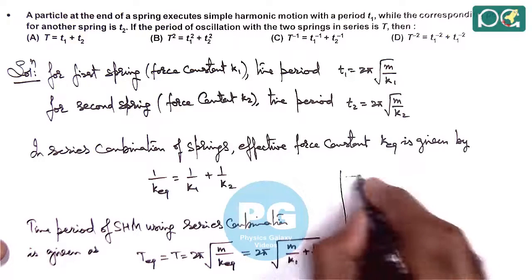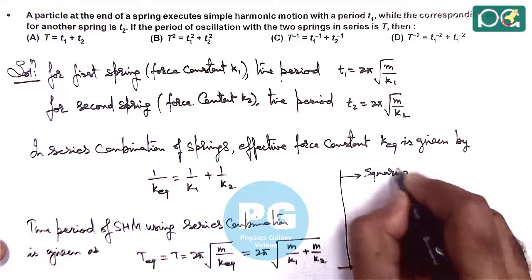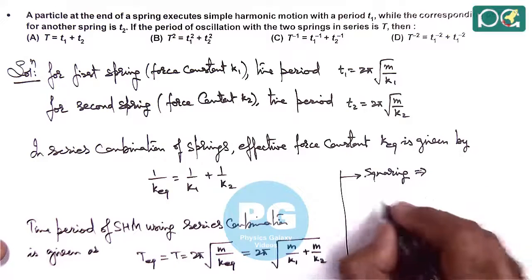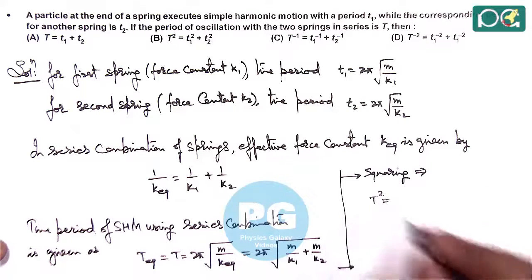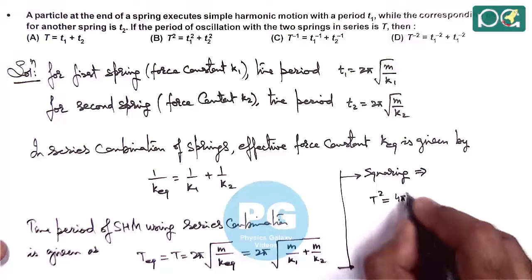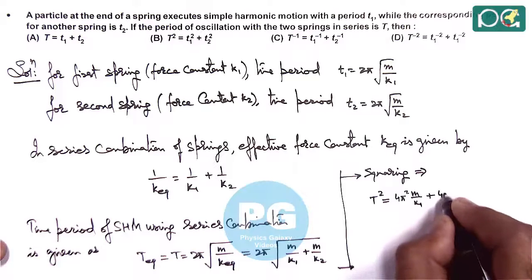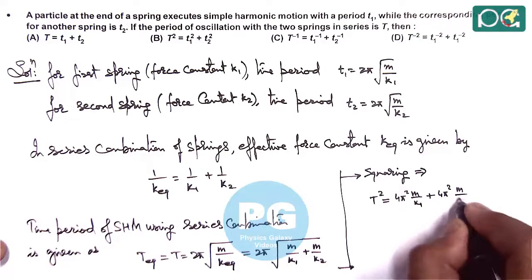Squaring this relation gives T² = 4π²M/k1 + 4π²M/k2.